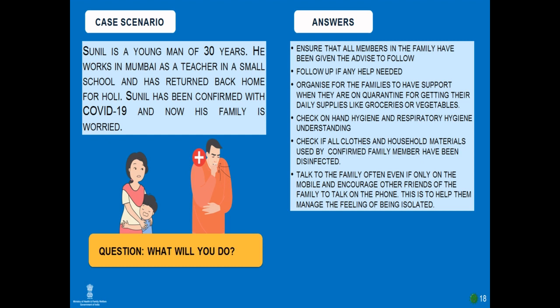Case study: Sunil is 30 years of age. He works in Mumbai as a teacher and returned home for Holi. He has been confirmed with COVID-19 and his family is worried. You need to ensure all family members have been given advice to follow up and check if any help is needed. Organize support for the family during quarantine for daily supplies like groceries and vegetables. Ensure hand hygiene and respiratory hygiene, and check that all clothes and household materials used by the confirmed family member have been disinfected. Talk to the family often, support them, and encourage friends to call on the phone to help manage feelings of isolation.